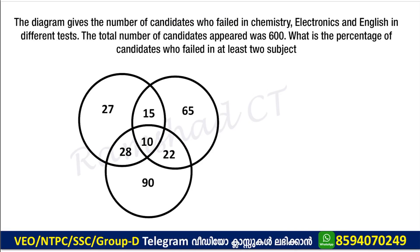Logical Venn Diagram means that for NTPC, RRB, SSC exams, there are a few questions about Venn Diagram. We will ask questions about Venn Diagram. The diagram gives the number of candidates who failed in Chemistry, Electronics, and English in different tests. The total number of candidates appeared was 600. What is the percentage of candidates who failed at least two subjects?